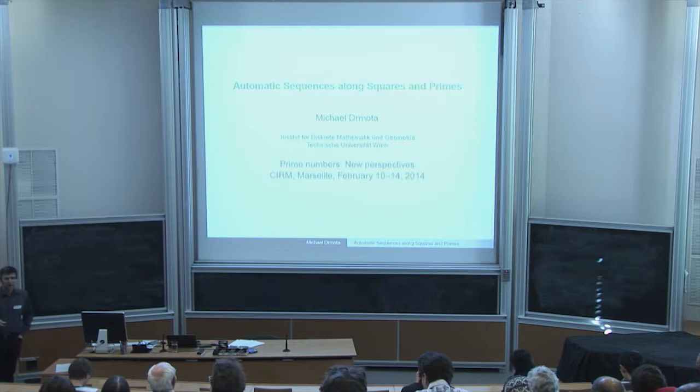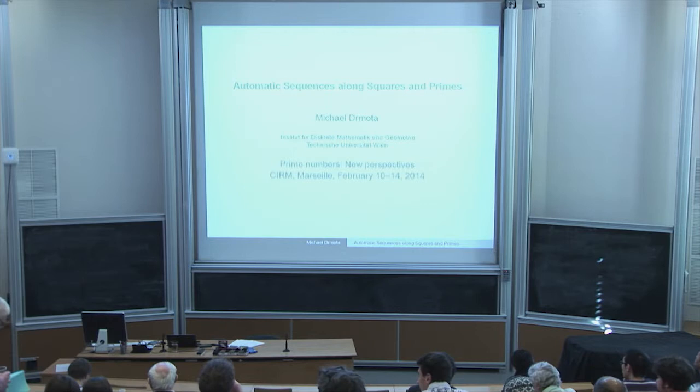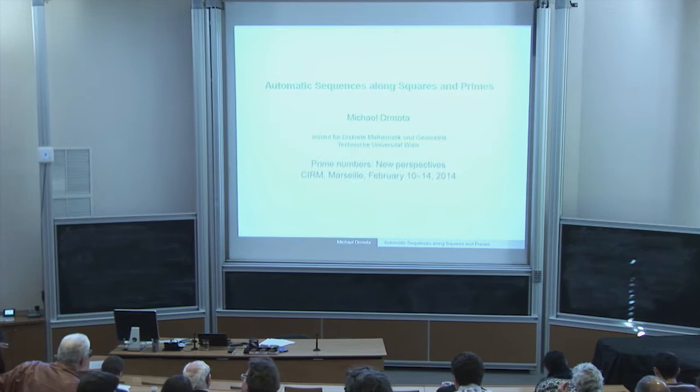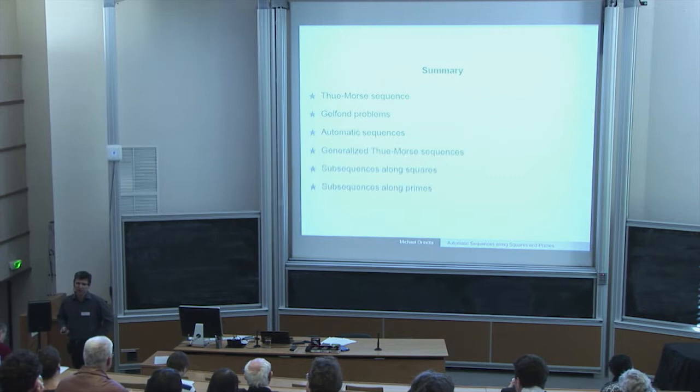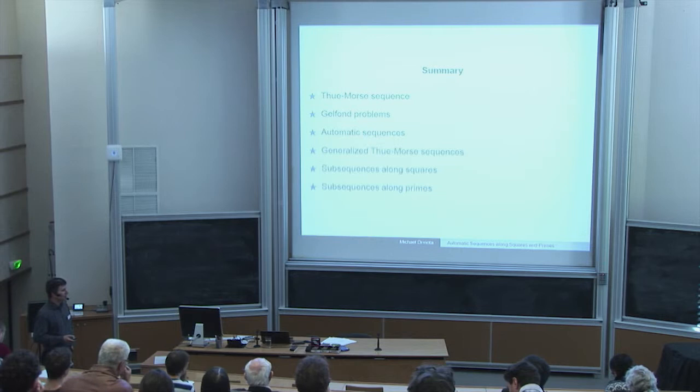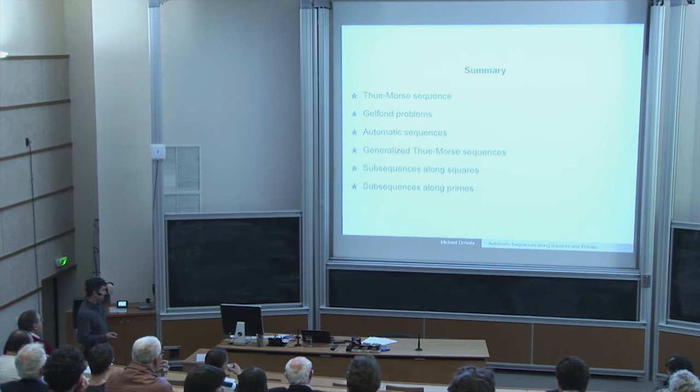This talk covers primes and squares, and is a kind of survey. There will be some recent and new results contained, but the flavour is a survey and an introduction to the field. I start with the most classical automatic sequence, the Thue-Morse sequence, which will also appear in the next talk by Montgomery.